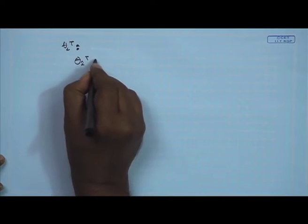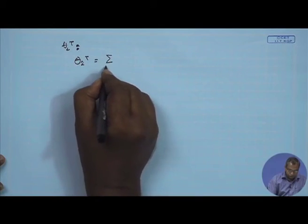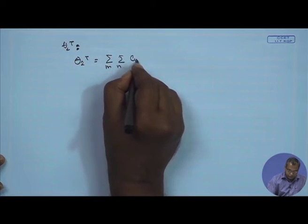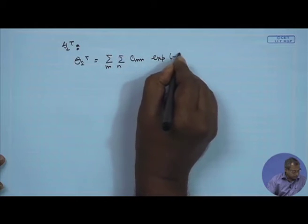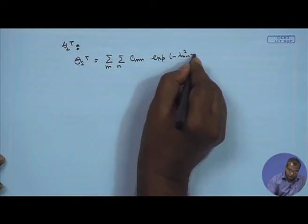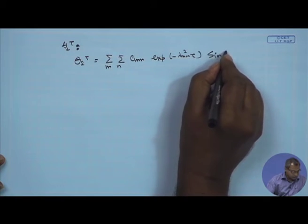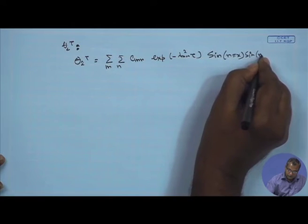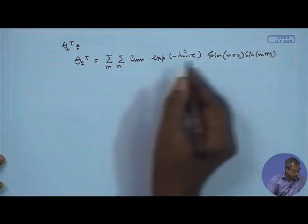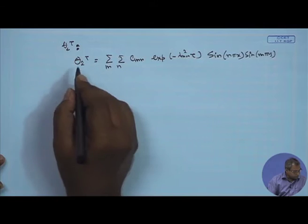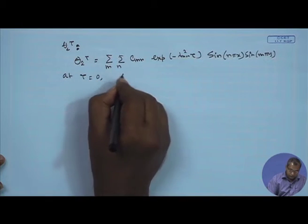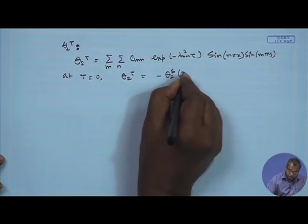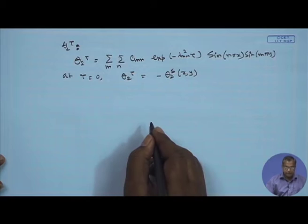Theta 2 tau will be nothing but summation over m and n of c_mn exponential minus lambda_mn squared tau, times sin(nπx) sin(mπy). At tau equal to 0, the initial condition gives theta tau equal to minus theta 2s, which is the solution of the steady state part.